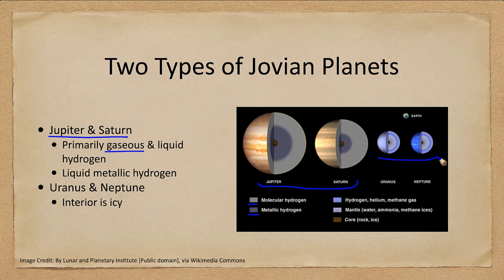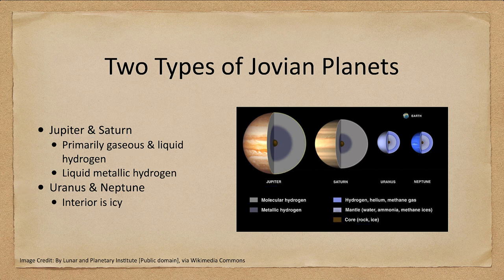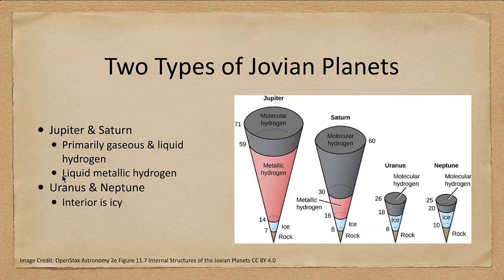Uranus and Neptune, on the other hand, are icy. They have a core of rock and ice and a mantle which is water, ammonia, and methane. They're missing a lot of the hydrogen seen in the gas giants — even though they're made up primarily of hydrogen in their atmosphere — but they do not have the metallic hydrogen that will be very important for looking at their magnetic fields.